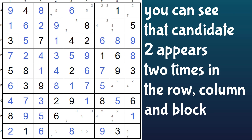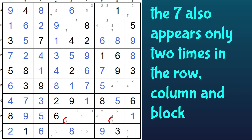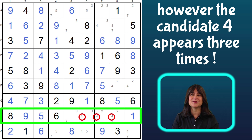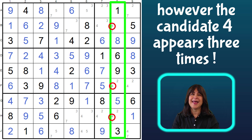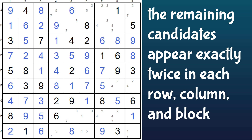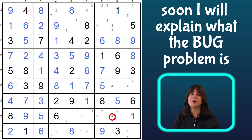You can see the two appears twice in this row, twice in this column, and twice in this block. The same goes for the seven — it appears twice in the row, twice in the column, and twice in the block. But the number four appears three times in this row, three times in this column, and three times in this block. As long as the number appears three times in each of those units — row, column, or block — and the rest of the cells are bivalue with their candidates appearing only twice in each unit, then this will work. So the number four, the number that appears three times, solves the bug problem.